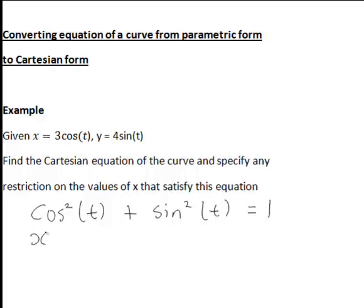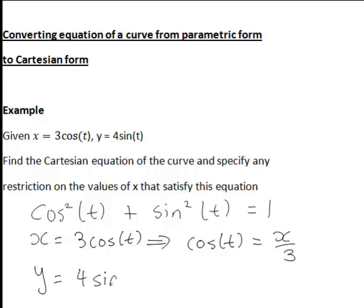Because in this case we have X equal to 3 cos t, so therefore that can be rearranged to give cos t equals X divided by 3. Similarly Y equals 4 sin t can be rearranged to give us sin t equals Y divided by 4.